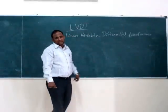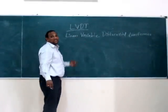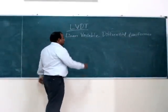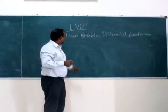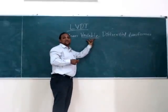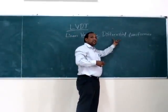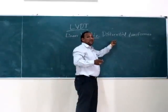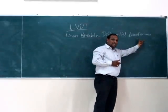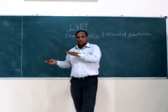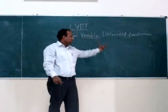Why is that name given? The output of this LVDT is linear, that is why 'linear' is given. It depends on the variation of the core, so that is why it is 'variable.' Why 'differential'? Because it depends on the differential between the primary and secondary coil. And 'transformer' means it transforms from a particular voltage to another voltage.